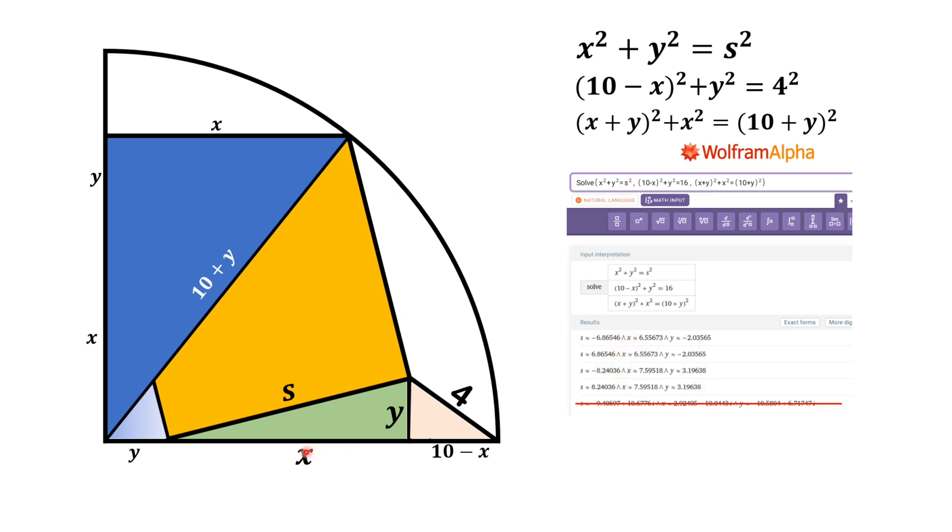But we have to keep in mind that x, y and s, these are all lengths so they cannot be negative. So, we have to choose only the solution where all values are positive. The first three solutions having negative values are not of our interest. The only solution that has all positive values is this one.